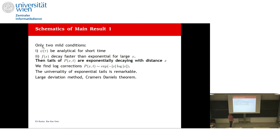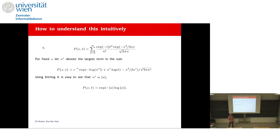The general probability of being at x at time t is a sum over number of jumps n from 0 to infinity: the probability of making n jumps times the probability to be at x given n. The main results require two mild conditions: first, the waiting time PDF must be analytical for short time; second, the PDF of jump length must decay faster than exponential for large x. If these hold, the tails of p(x,t) decay exponentially in x, with logarithmic corrections, related to large deviation theory and the Cramér-Daniel theorem.